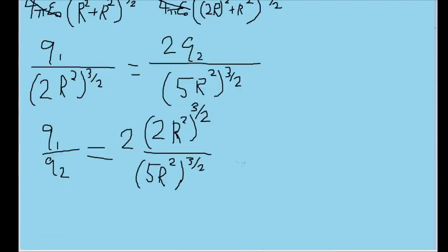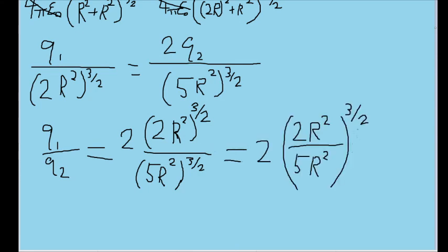Now we can simplify this even further by realizing that something to a power divided by something to that same power can be written as though it's all to one power, like this. And now we can see that the r squared will cancel out as well.